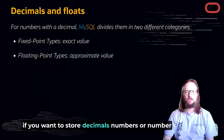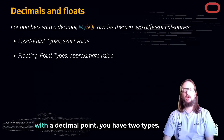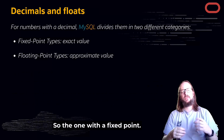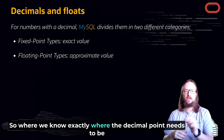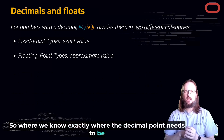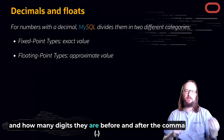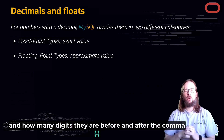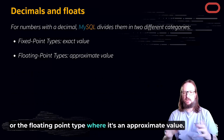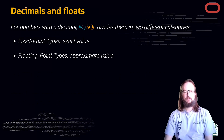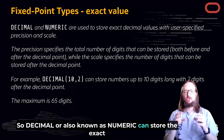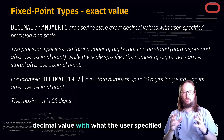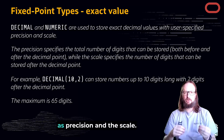Now if you want to store decimal numbers — numbers with a decimal point — you have two types. The first is the fixed-point type, where we know exactly where the decimal point is and how many digits there are before and after it. The second is the floating-point type, where it stores an approximate value.